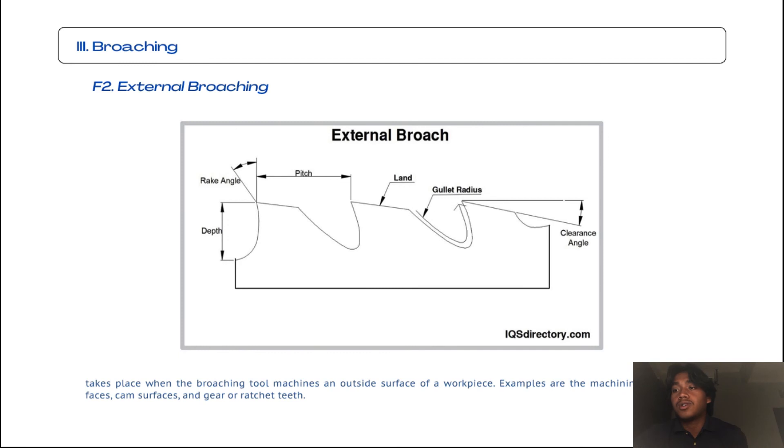The second subtopic from broaching is external broaching, which takes place when the broaching tool machines an outside surface of the workpiece. Examples are the machining of flat surfaces, cam surfaces, and gear or ratchet teeth. You can see the external broach example at this point.